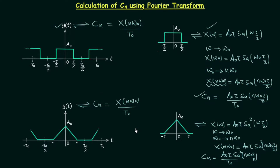Now what if we have a trapezoidal pulse train? In that case, select the central trapezoid and then use the method of differentiation to calculate the Fourier transform X(ω). We have used the method of differentiation in many examples, so it will not be difficult. Once you have the Fourier transform, repeat this process and calculate Cn.